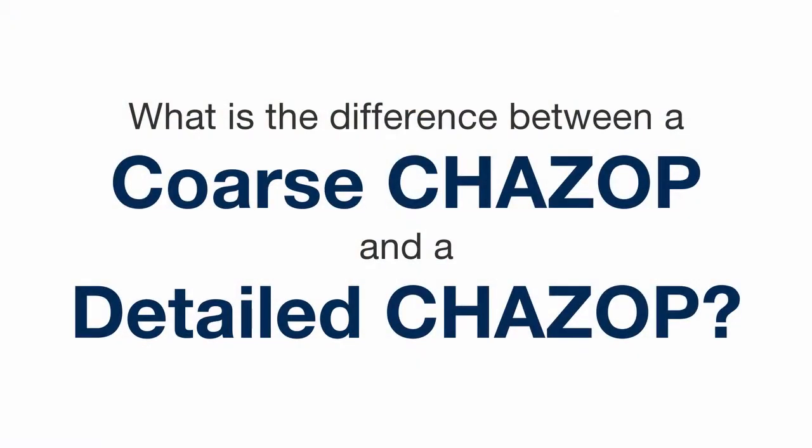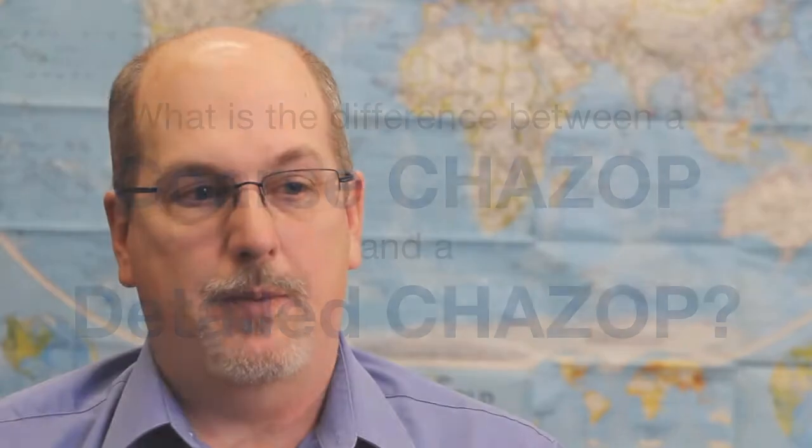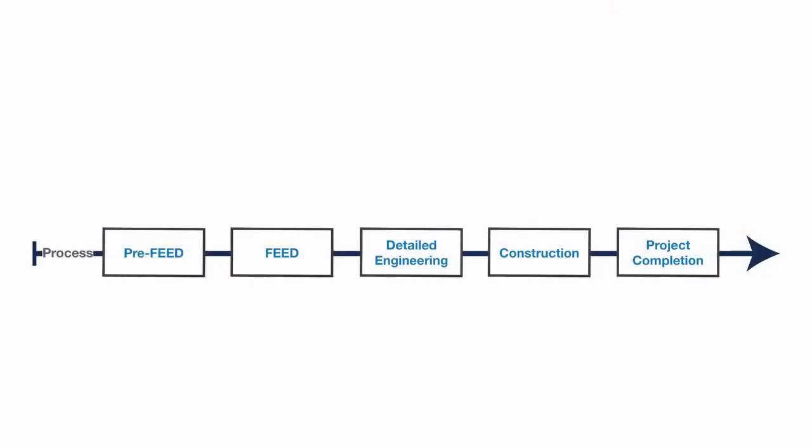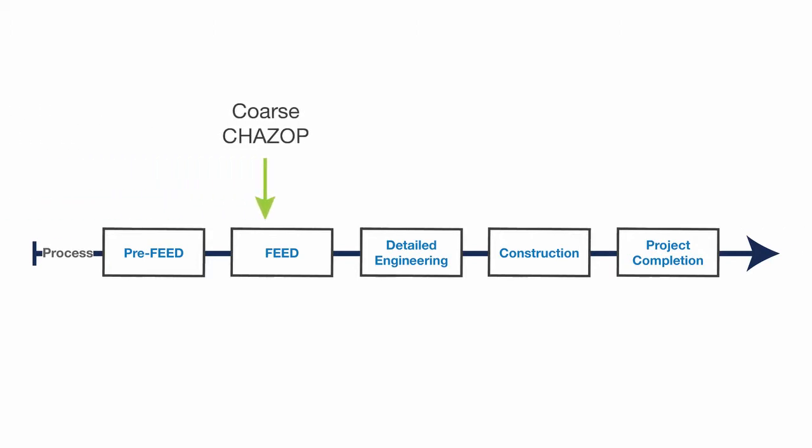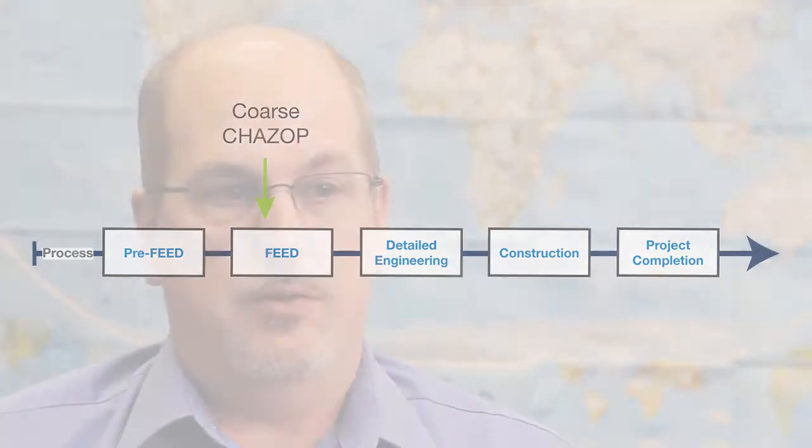The difference between a coarse CHAZOP and a more detailed CHAZOP is not only timing, but the focus. A coarse CHAZOP looks at a very high-level block diagram very early in the design stage to determine whether there are any significant issues that we can correct early in the process.